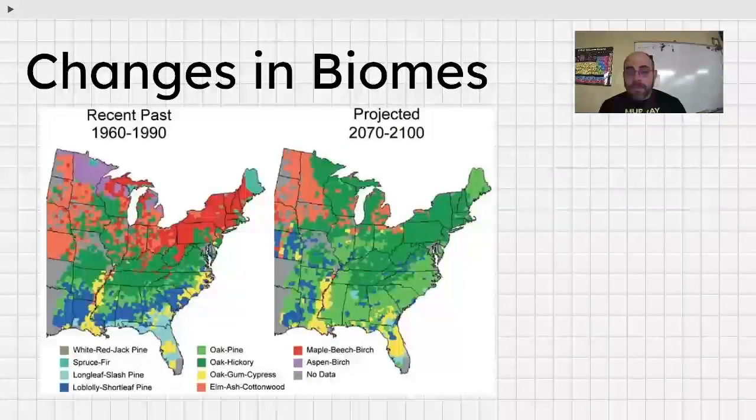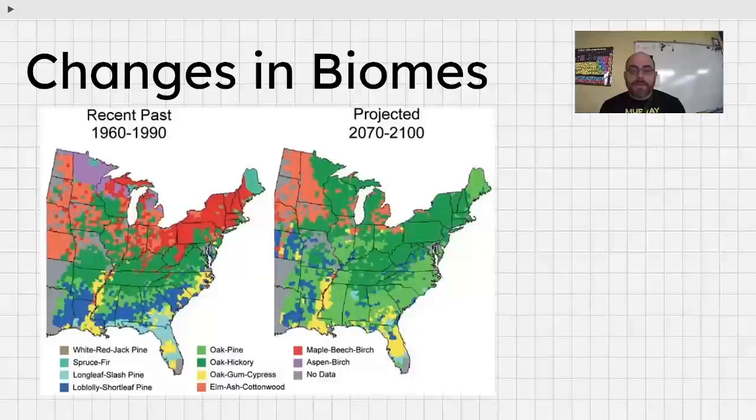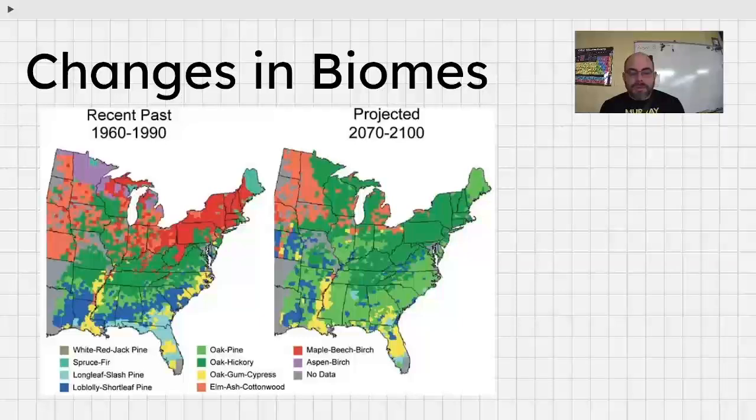And because of this, biomes are dynamic. Dynamic just has to do with change. Understand that a biome is not a static thing, but the earth is constantly changing. Therefore, the biomes on the earth are also changing. Now, there could be changes based on the types of organisms that live on the earth, say, you know, humans.